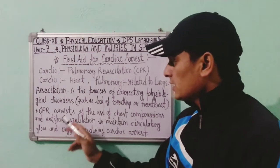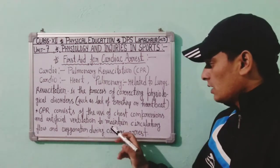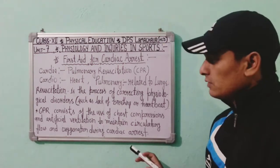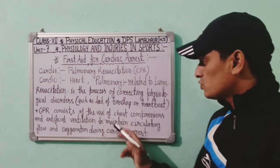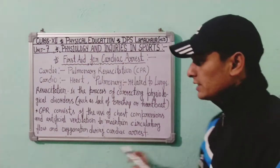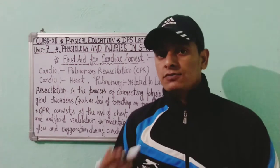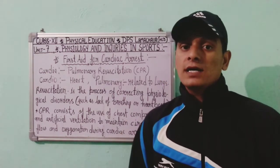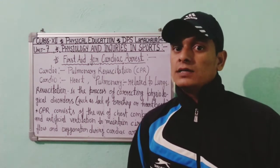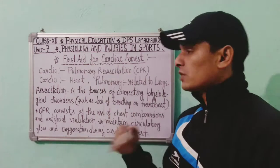CPR consists of the use of chest compressions and artificial ventilation to maintain circulatory flow and oxygenation during cardiac arrest. CPR is the first aid for cardiac arrest. However, CPR is suggested for adults only. A trained person can give CPR to children, but CPR is not suggested for newborns.